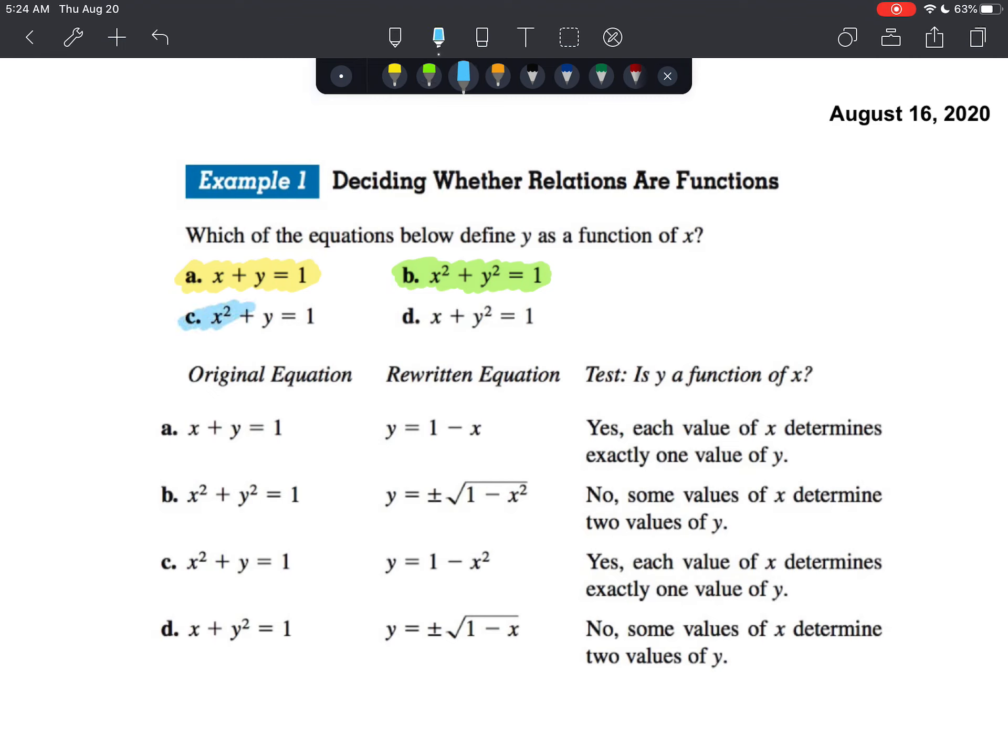C, x squared plus y equals 1. If we were to solve that for y, we would realize that that is just a quadratic equation in which the parabola is opening down. That is also a function.